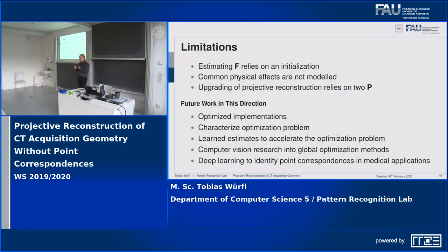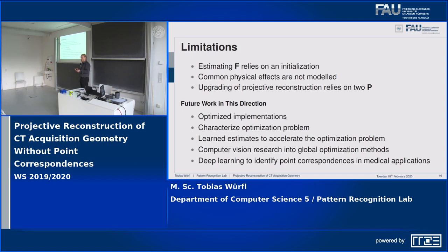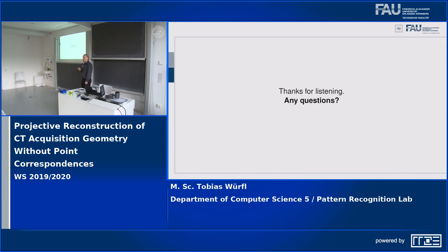That concludes my talk. What I presented is: we are now able to do a projective reconstruction simply based on the imaging data. Some limitations remain: I still rely on an initialization because I have a non-convex optimization problem, I need to investigate how to come up with a good initial estimate, I need to characterize this optimization problem further, and I have not yet modeled physical effects — so lots of future work. But I believe this is a fundamentally new idea that could enable us to build cheaper CT scanners which do not require a reproducible trajectory and are resistant to rigid motion by design. Thanks for listening.